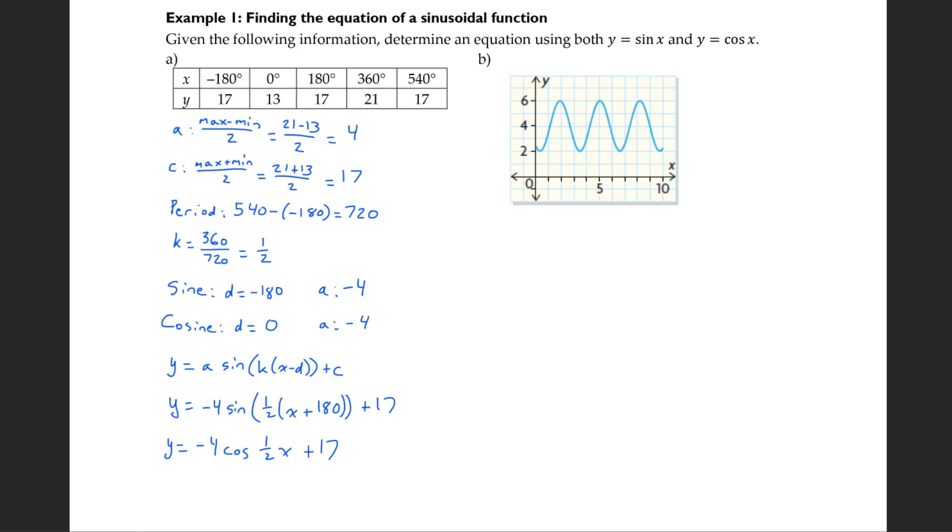Now if we look at b, b involves a bit of estimation because it's not exactly on the x values at perfect points. The y values we can say they are. So our a value, max minus min divided by 2 equals 6 minus 2 divided by 2, which equals 2. C, max plus min divided by 2, 6 plus 2 divided by 2, which is 4.